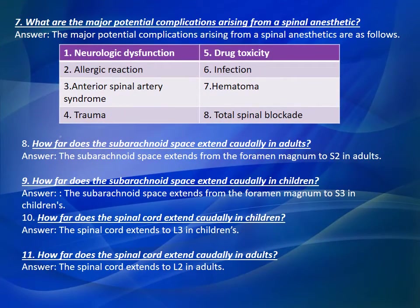Question Number 7: What are the major potential complications arising from a spinal anesthetic? Answer: The major potential complications are as follows: 1. Neurologic dysfunction, 2. Allergic reaction, 3. Anterior spinal artery syndrome, 4. Trauma, 5. Drug toxicity, 6. Infections, 7. Hematoma, 8. Total spinal blockade.